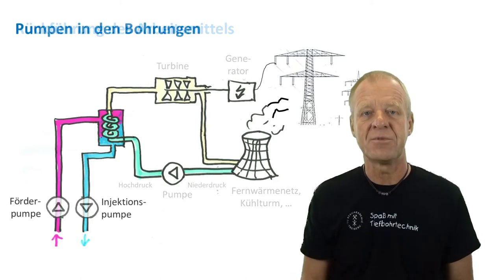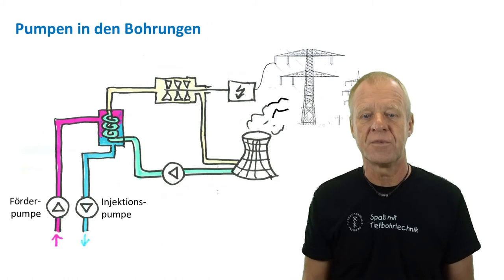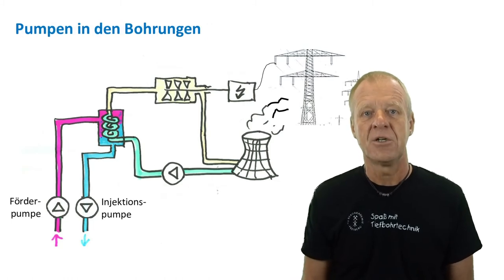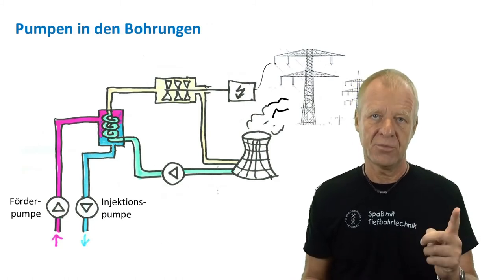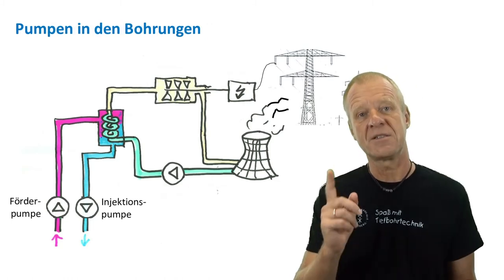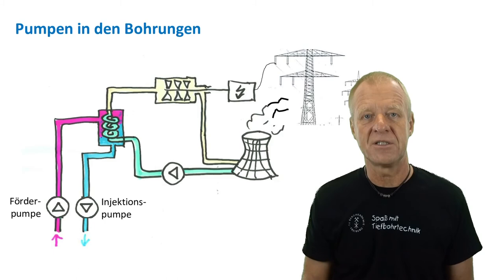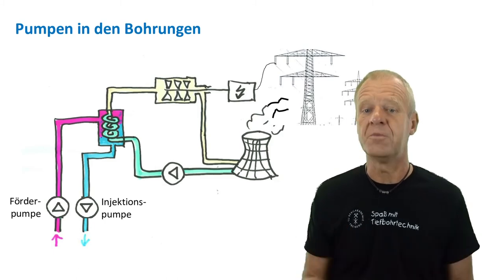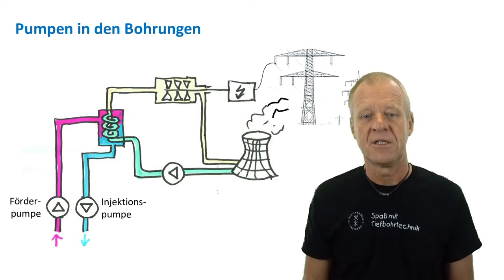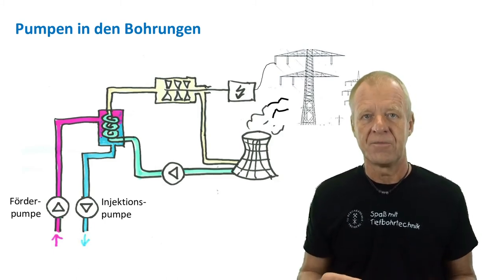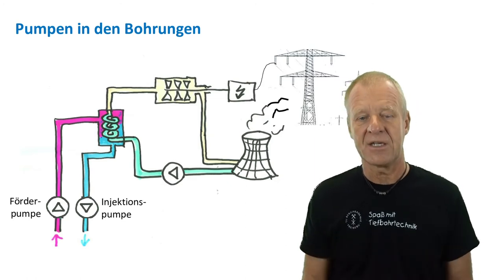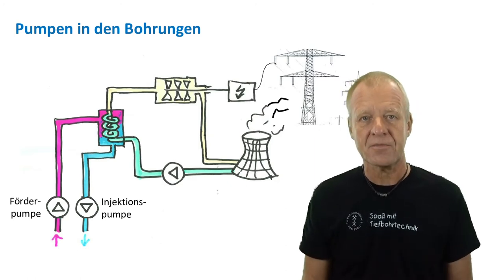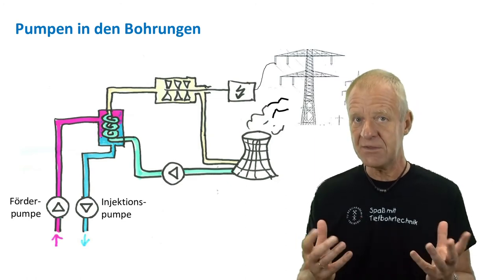You would easily agree that such large amounts of water will not come out of the earth by itself, and will also not disappear into the ground without technical installations. This is why we have large and powerful pumps in the production and re-injection wells. They get the required electrical power for their operation from the power plant itself.